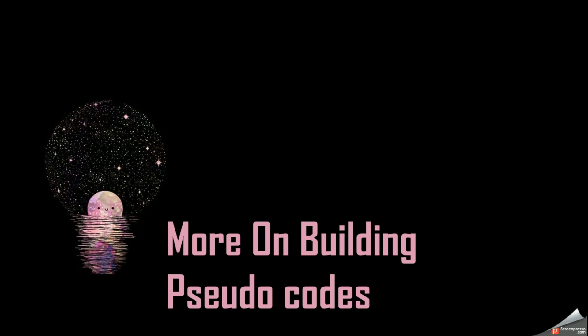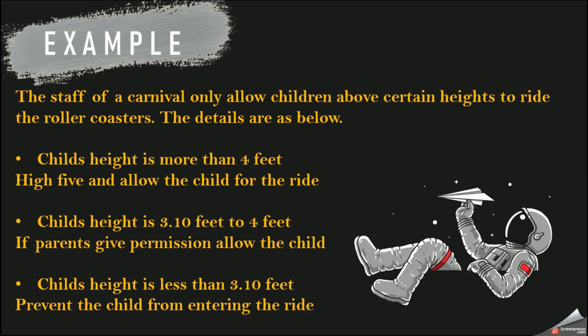Welcome you all to Study with Malcha YouTube channel. Today we are going to learn another new complex example of selection condition pseudocode. See this example: the staff of a carnival only allow children above certain heights to ride the roller coaster.